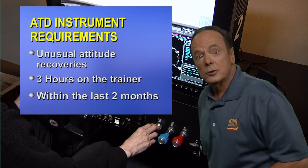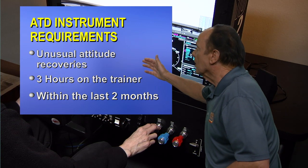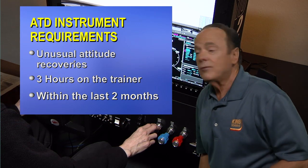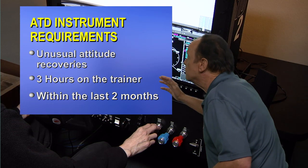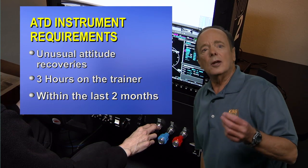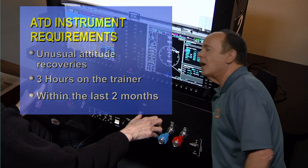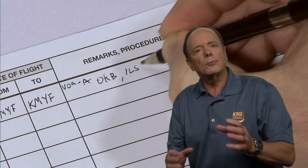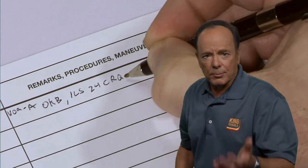The first requirement when using an ATD is you have to do two nose-low and two nose-high unusual attitude recoveries. Next, you need to have three hours of instrument experience using the trainer. And finally, you have to do all of the requirements every two months. You need to log each of these activities to be able to prove that you are current. So, even though you had to intercept and track a course to fly an approach, you do need to log it separately.